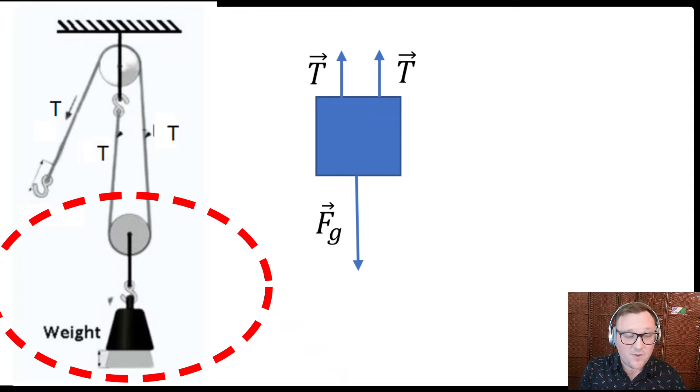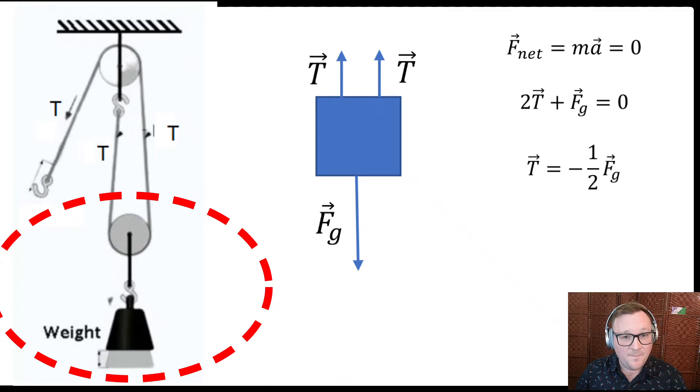It has force of gravity pointing down, but it has two tensions pointing up, right? Because there's the two strings coming out from there. We know that tension is equal all along the same string and we know that it isn't accelerating. So these forces must be balanced. So we can see that tension equals half of the force of gravity.